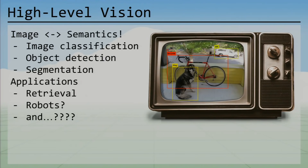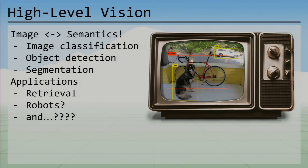Finally, we have high-level vision — going from images to semantics, actual meaning. Applications include image classification: given an image, what is it of? Tagging is where an image contains multiple objects and you want to name all of them. Object detection is knowing what's in an image and where it is. Segmentation is pixel-level labeling of everything. We also went through a few applications you can build on top of these high-level vision techniques.